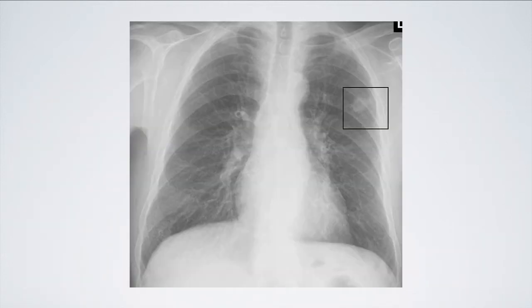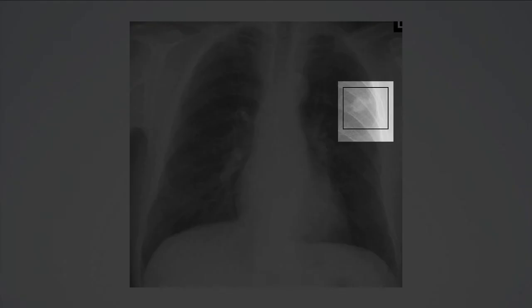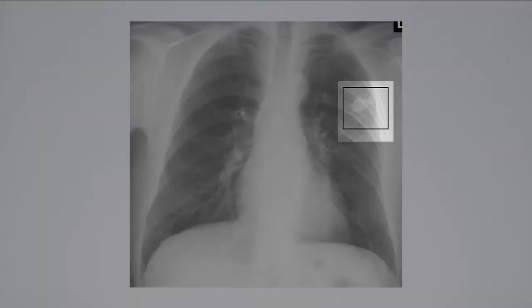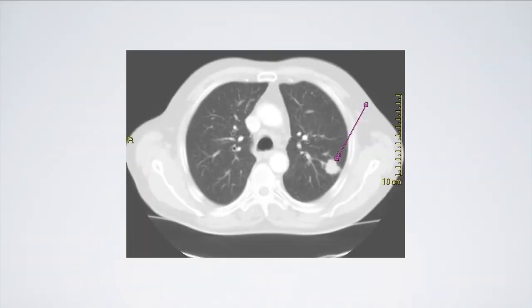Here you can see a chest X-ray. The most obvious abnormality is a coin-shaped lesion on the left side of the chest in the upper zone. Now we can look at a CT of this same lesion. All of the various changes that may be seen on a chest X-ray is beyond the scope of this podcast, but if you can try to get some experience in the radiology department at looking at chest X-rays and CTs of lung cancer.